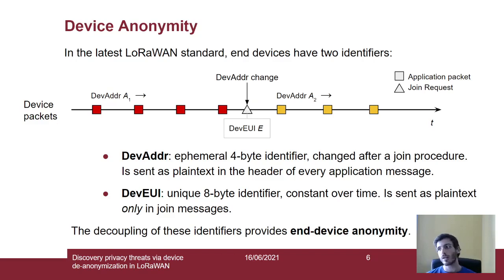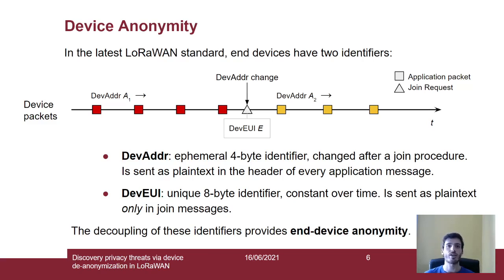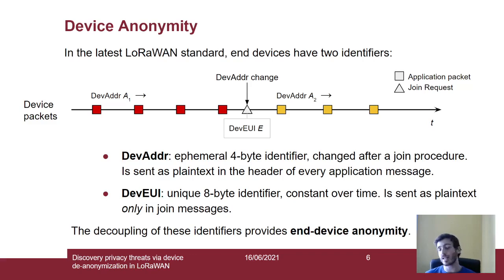LoRaWAN enforces end device anonymity by the use of two different identifiers per end device. On one hand, we have the DevAddr — an ephemeral 4-byte identifier assigned to the device by the network server and changed after a join procedure. Then we have the DevEUI — a unique 8-byte identifier which is constant over time. The DevAddr is sent as plain text in every application message, while the DevEUI is sent as plain text only in join messages. The decoupling of these identifiers provides end device anonymity in LoRaWAN.